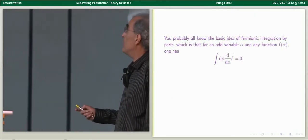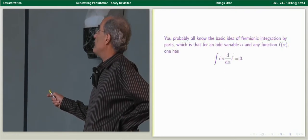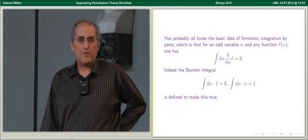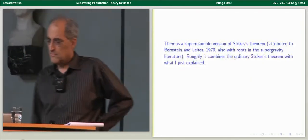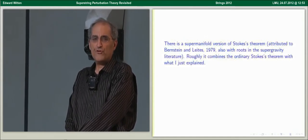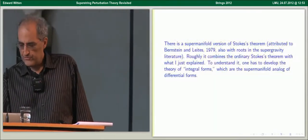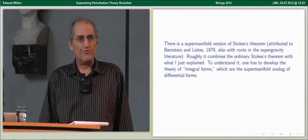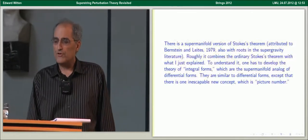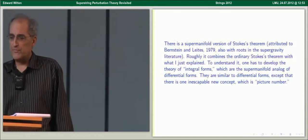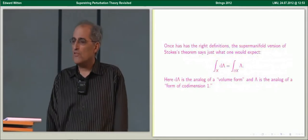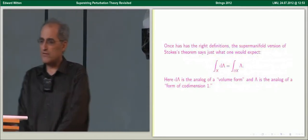You probably all know the basic idea of fermionic integration by parts: if alpha is an odd variable and f(alpha) is any function, then the integral of a total derivative is zero. In fact, Berezin defined his integral precisely to make this true. There is a supermanifold version of Stokes' theorem which roughly combines the ordinary bosonic Stokes' theorem with a souped-up version of fermionic integration by parts. The appropriate objects are the supermanifold analog of differential forms — they're similar to differential forms except there's one unavoidable new concept, which is picture number.